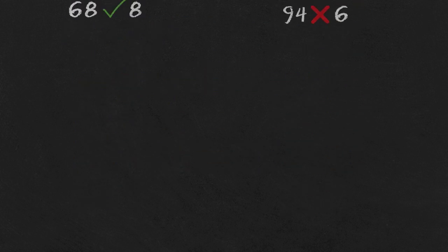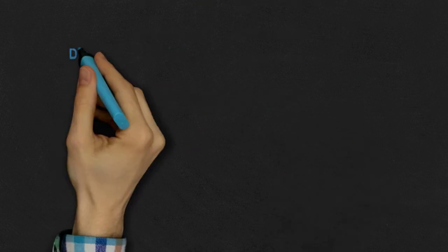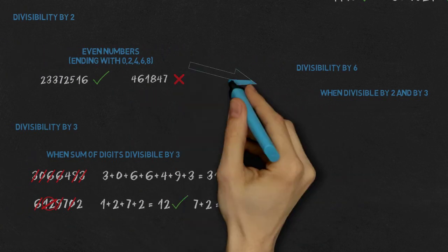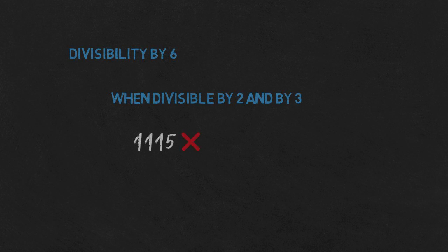For a change, something super easy: a number is divisible by 5 if it ends with 5 or 0. That's it. For divisibility by 6, we take advantage of the fact that 2×3=6, so if a number is divisible by both 2 and 3, it is also divisible by 6. We can immediately see that 1115 is not divisible by 6 because it's odd. 1392 is even, so we check divisibility by 3: ignore 3 and 9, and we're left with 1+2=3. So even numbers that are divisible by 3 are also divisible by 6 — all and only those numbers.